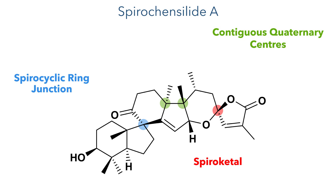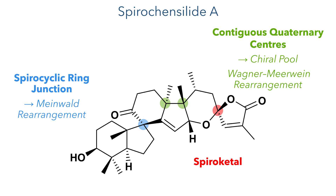In order to overcome these challenges, the researchers would use a Meinwald rearrangement to construct the spirocyclic ring junction, while the contiguous quaternary centers could be introduced using a chiral starting material and also a Wagner-Mierwein rearrangement. To construct the spiroketal, they could use an oxidative cyclisation of a hemiacetal with an alkyne.